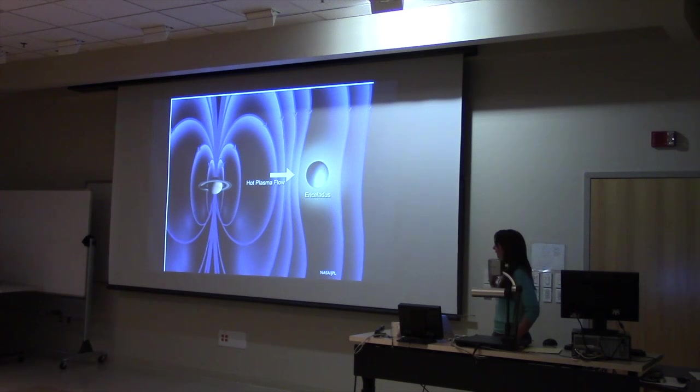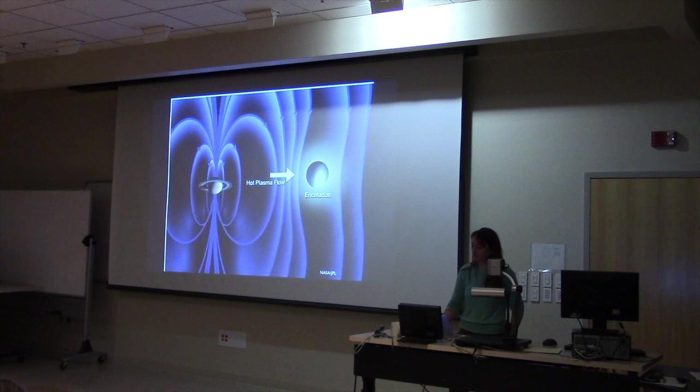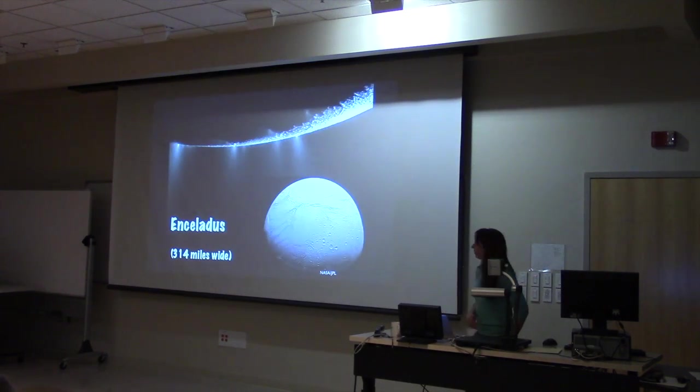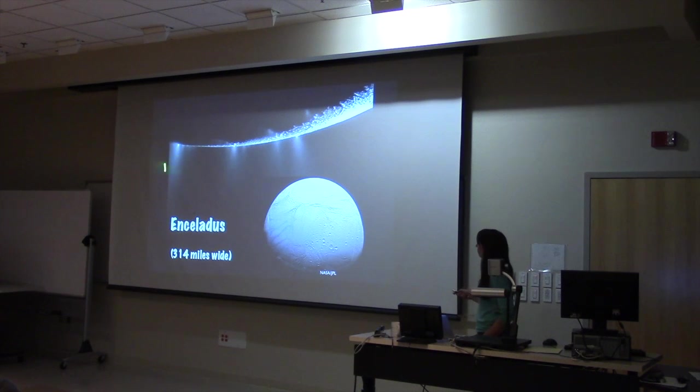So when Cassini flew by Enceladus and observed a large perturbation that was indicative of Enceladus having an atmosphere, which we knew couldn't be true, at least not an atmosphere like Titan has one. But what was determined was that Enceladus actually has several plumes of gas coming out of its south pole. So this is an image of these plumes.